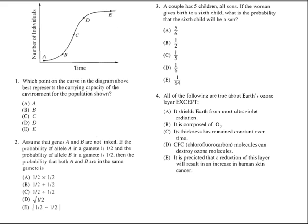Which point on the curve in the diagram above best represents the carrying capacity of the environment for the population shown? Well, what that really means is where the population is leveling up, or where it is becoming relatively constant. For this whole part, the population is just growing exponentially, but as it reaches point E, it's becoming relatively constant. So the answer is E.